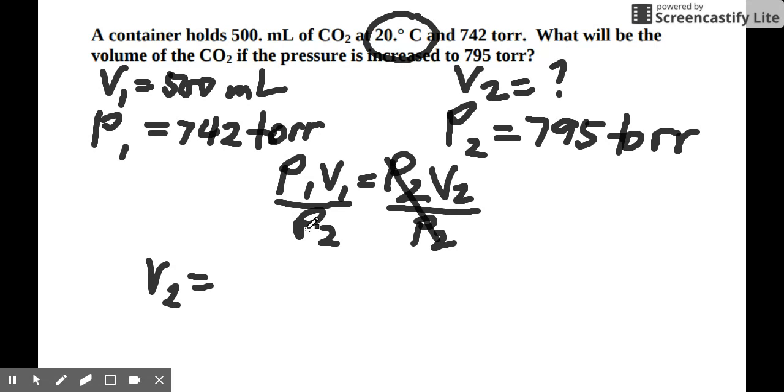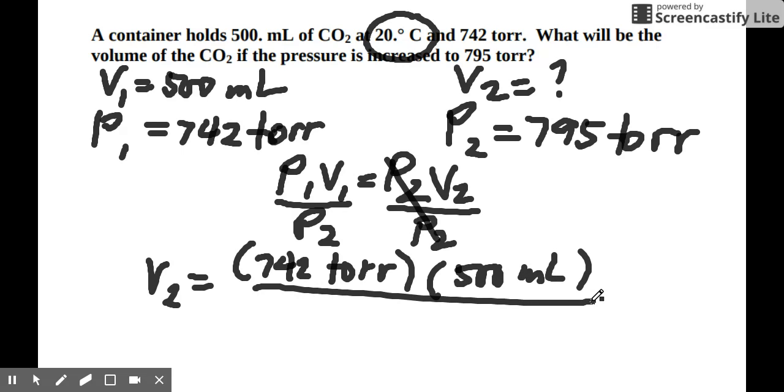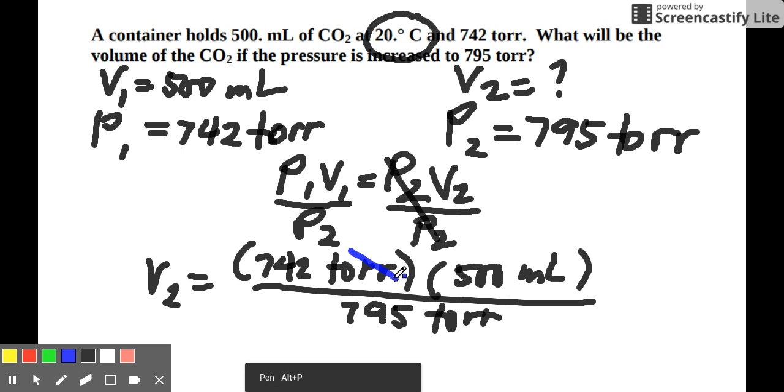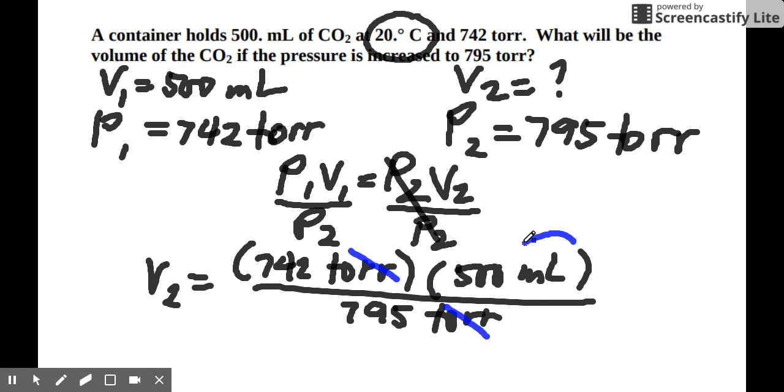So P1V1, so that's 742 torr times V1 of 500 ml over P2, which is 795 torr. So we're good, and you'll see that the torr will cancel out, and the final unit is ml, which is okay, because the problem doesn't state what should be the volume, so just use the default volume in the problem.